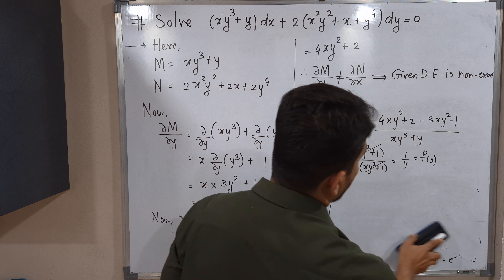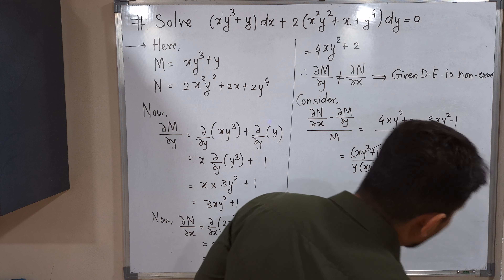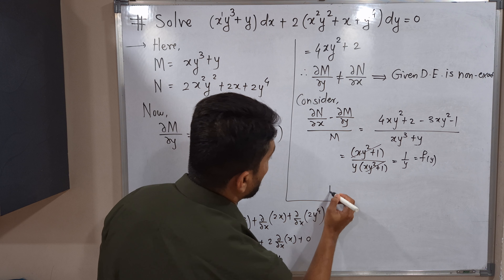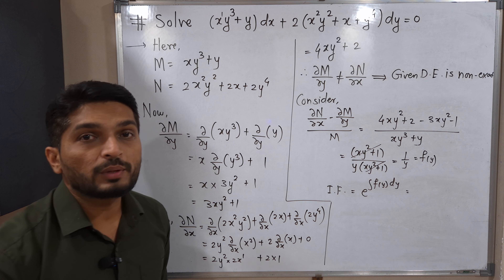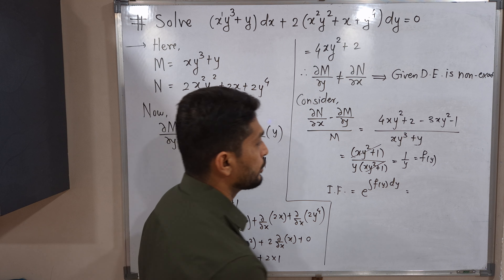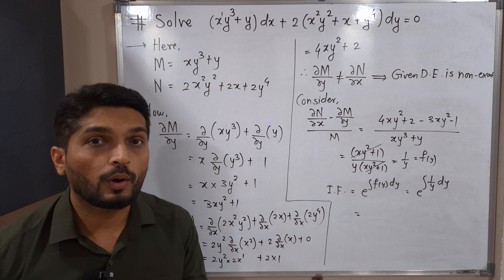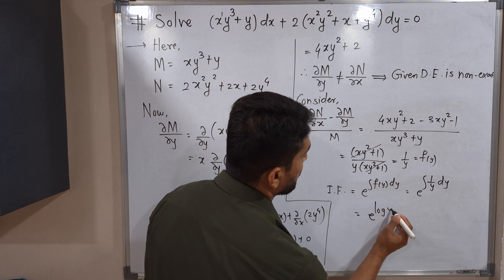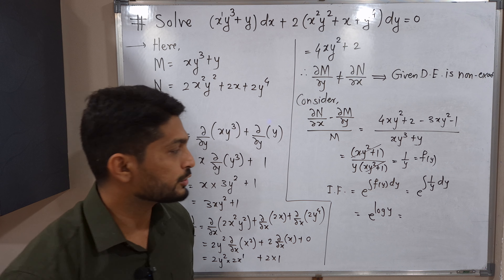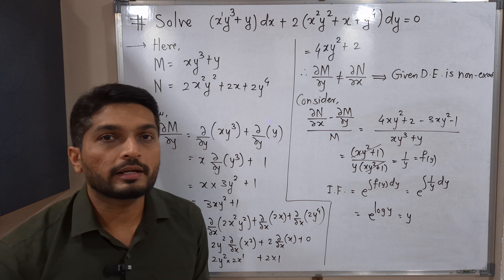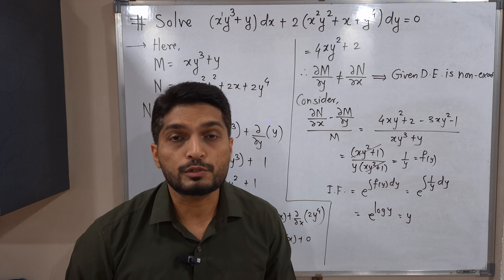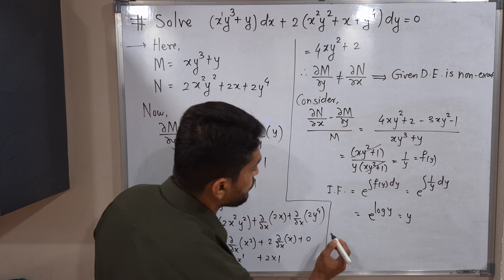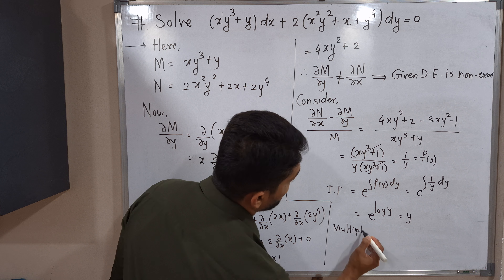The condition of Rule 2 is satisfied, so the integrating factor is e^(∫f(y)dy) = e^(∫(1/y)dy) = e^(log y) = y. Since e and log cancel each other, the integrating factor is y. Multiplying the given non-exact differential equation by y will convert it into an exact differential equation.